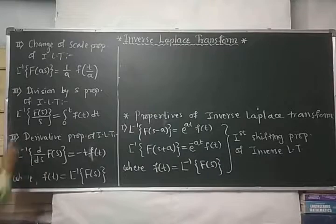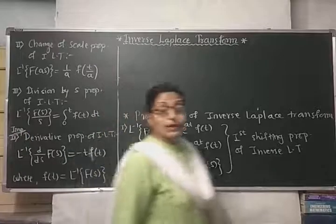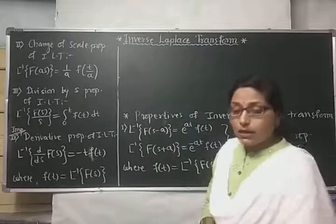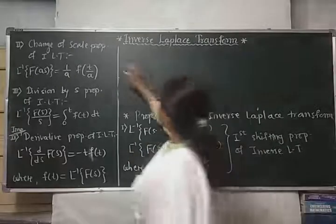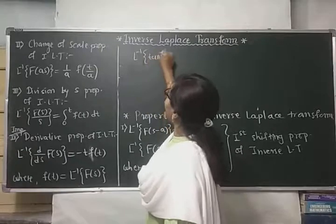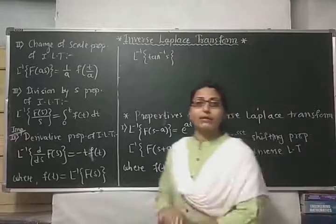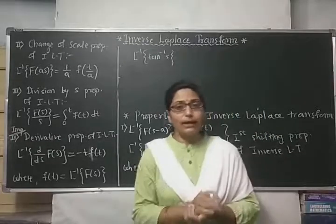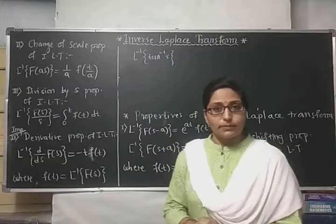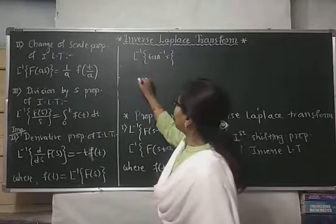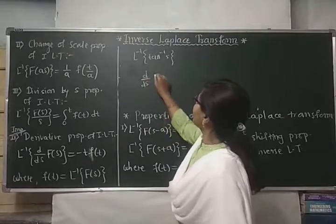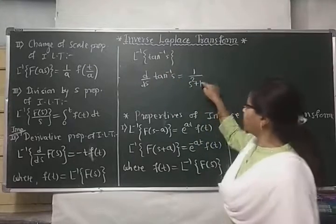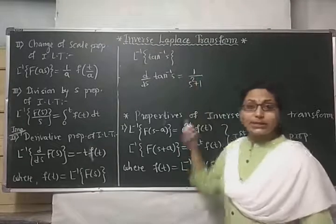The derivative property is very important because most questions can be solved using it — specifically for functions whose Laplace inverse cannot be found directly. For example, to find the Laplace inverse of tan⁻¹(s): there is no standard result for this directly. But if we differentiate tan⁻¹(s), we get 1/(s²+1), and we know the Laplace inverse of 1/(s²+1) is sin(t).